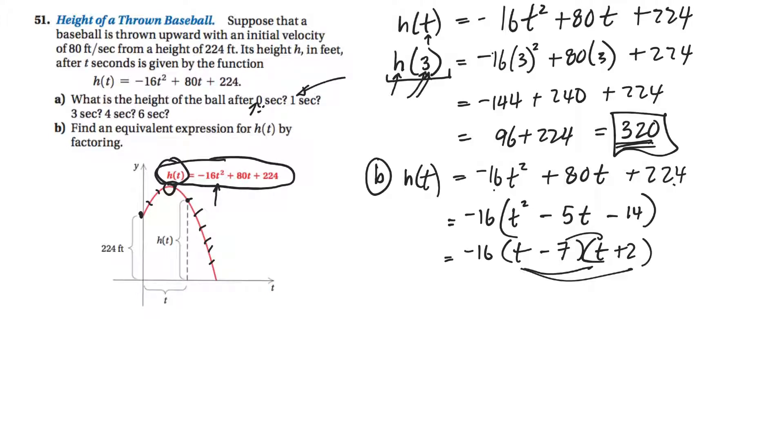So, this function h of t, I could also call it this. And another useful thing there is, if I want to plug in a number, I can plug it in up here, like I did there, or I could plug it into this one. As long as I had done it right, I could plug the 3 in there. So, negative 16 times 3 minus 7 times 3 plus 2. Okay. So, it'd be negative 16 times negative 4 times, looks like 5, I think.